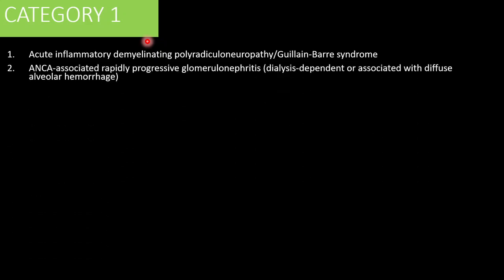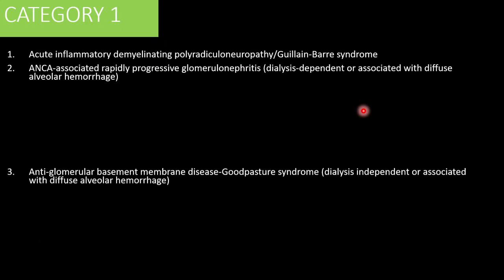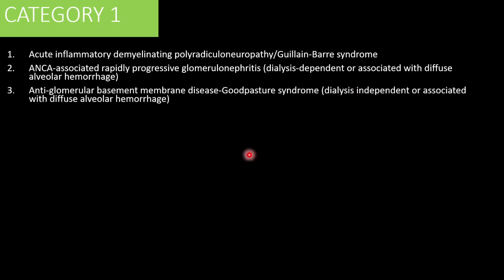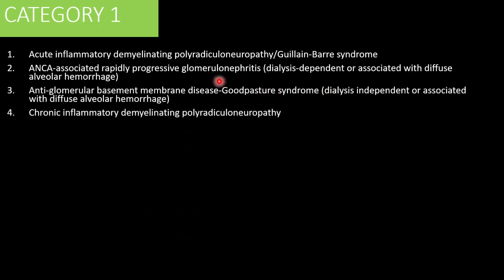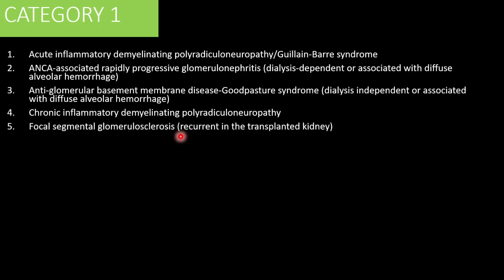Category 1 — mostly these are diseases where antibody plays a major pathological role. First is Guillain-Barré syndrome, ANCA-associated rapidly progressive glomerulonephritis, Goodpasture syndrome whenever there are life-threatening symptoms, chronic inflammatory demyelinating polyneuropathy (CIDP), and FSGS only if it is recurring in the transplant kidney.